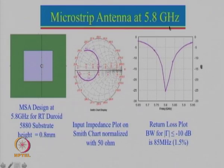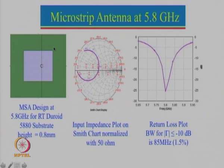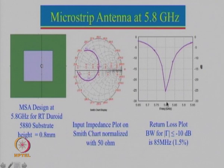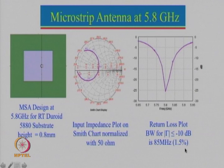Then we looked at microstrip antenna design at 5.8 GHz. This is a rectangular microstrip antenna defined by its length and width. We can choose a feed point such that it is matched to the 50 ohm line — the 50 ohm point is the central point of the Smith chart, also called the bull's eye. As we increase the frequency the plot shifts around and a perfect match is obtained. The bandwidth for reflection coefficient less than minus 10 dB is just about 85 MHz, which is just 1.5 percent.